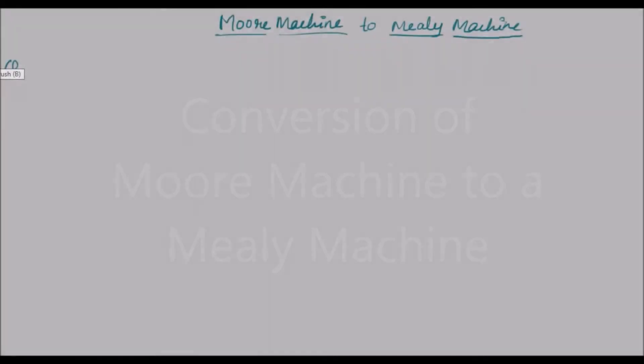Hey guys, I'm Akash and in this video let's talk about how to convert a Moore machine into a Mealy machine. The first thing we have to know about a Mealy machine is it has only one output, so the present state goes to the next state with different inputs, but it has only one output.